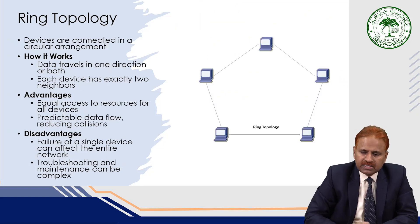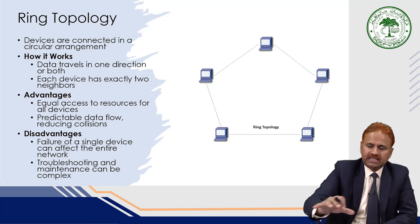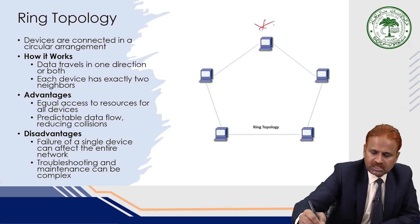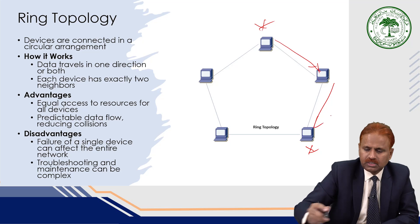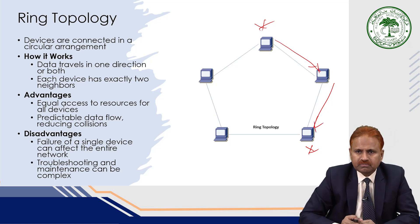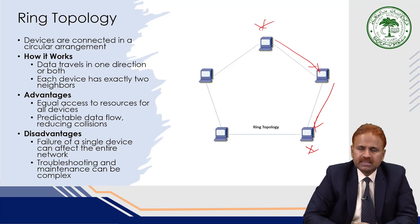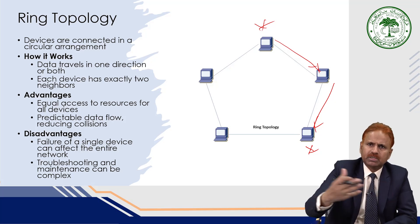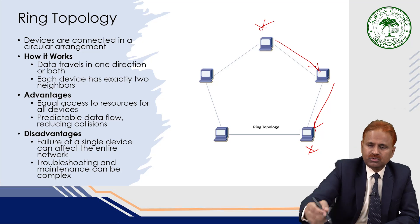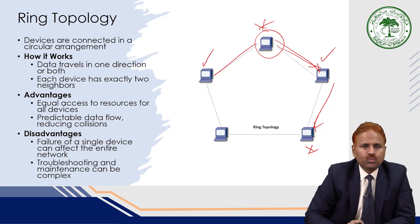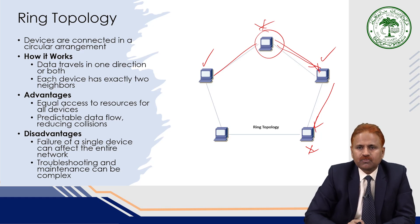In ring topology, the devices are connected logically to form a closed ring and the signal travels around it. Devices are connected in a circular arrangement and data travels in one direction, or in both directions depending on configuration. Each device has exactly two neighbors — one on each side. This provides equal access to resources for all devices and reduces collisions.